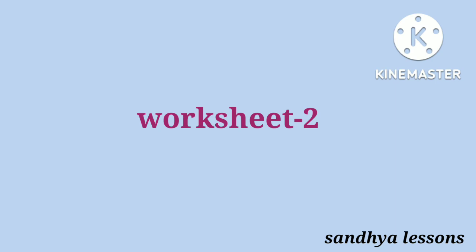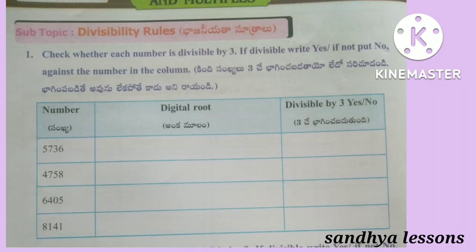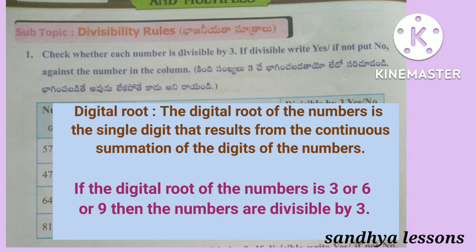Worksheet 2, First Roman: Check whether each number is divisible by 3. If divisible, write yes; if not, put no against the number in the column. The digital root of a number is the single digit that results from the continuous summation of the digits. If the digital root is 3, 6, or 9, then the number is divisible by 3. This is the divisibility rule of 3.